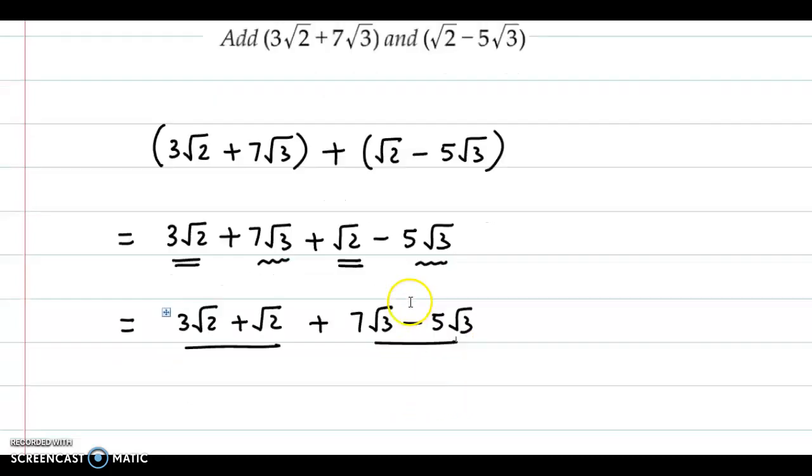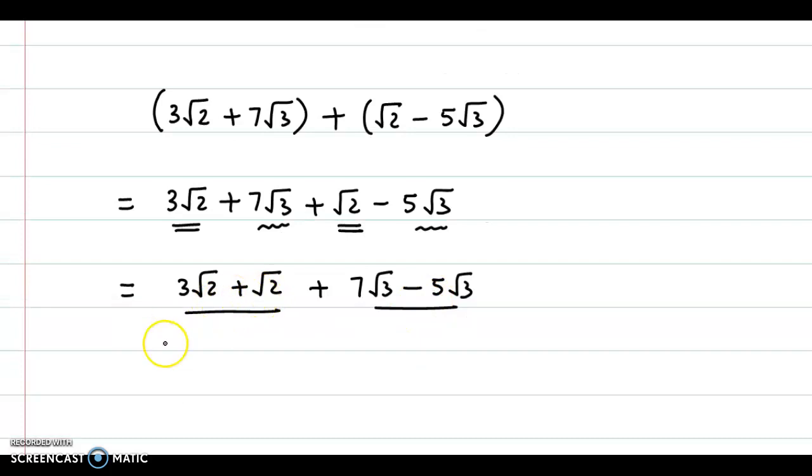Now 3√2 + √2 gives us 4√2, and 7√3 - 5√3 gives us 2√3. So our final answer is 4√2 + 2√3.